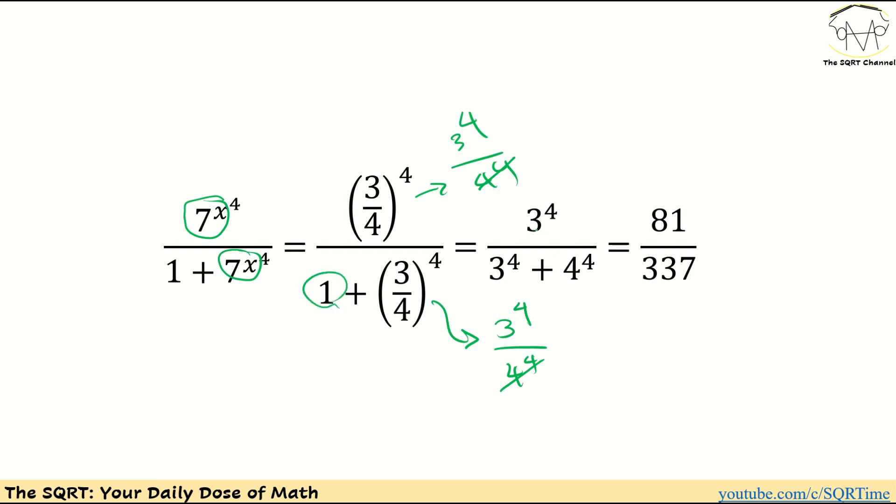You're going to see that we will end up with 3 to the power of 4 over 3 to the power of 4 plus 4 to the power of 4, which can be written as 81 over 337 as the final answer.